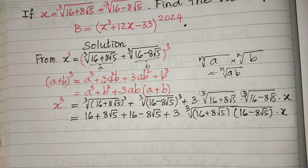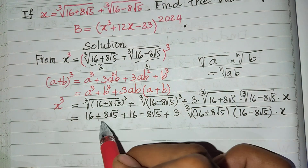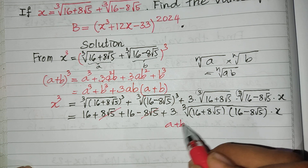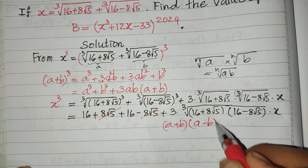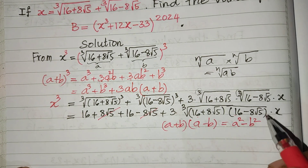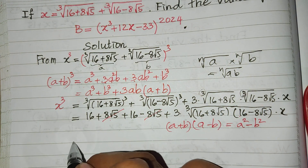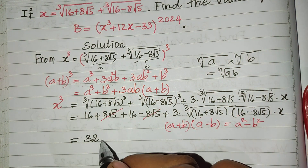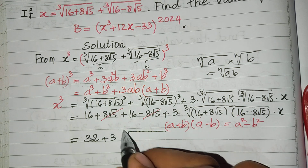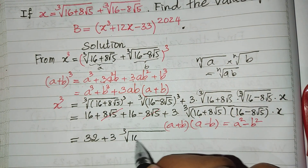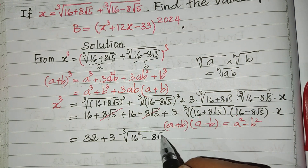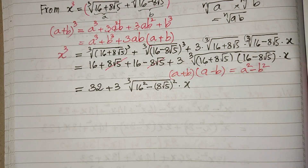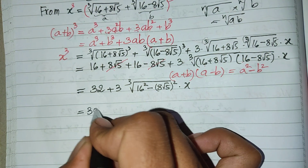We multiply (16 + h√5)(16 − h√5) = 256 − 5h² = 256 − 5h². And (16 + h√5) + (16 − h√5) = 32. So h³ equals 32 plus 3 times cube root of [(256 − 5h²)] times h. This simplifies to 32 plus 3 times cube root of that expression.